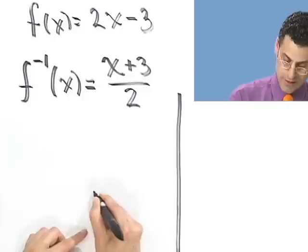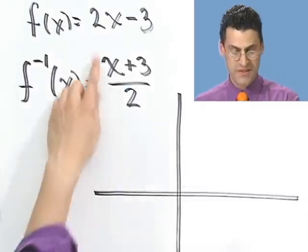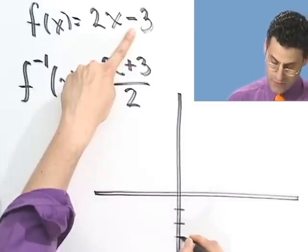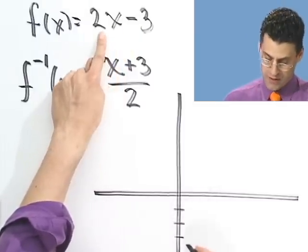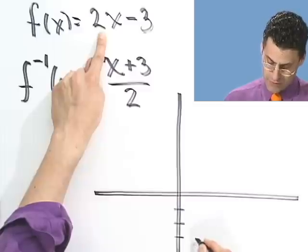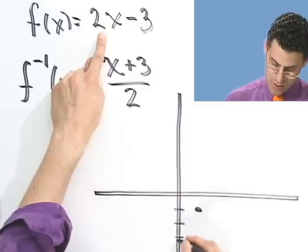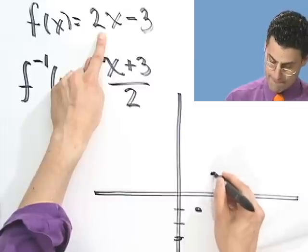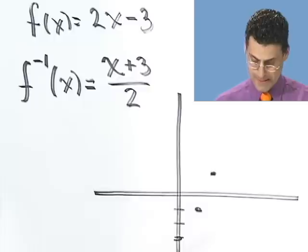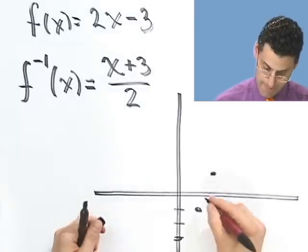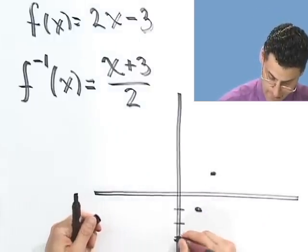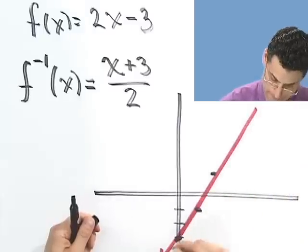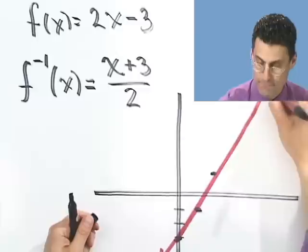So let's see if these are really inverses by looking at their graphs. So let's take a look here. So this is a straight line that has y-intercept negative 3, 1, 2, 3, and slope 2 over 1. So 1 over, 2 up. 1 over, 2 up. OK. So there we go. There's the first line.